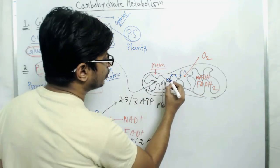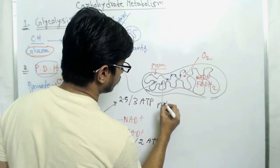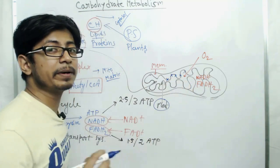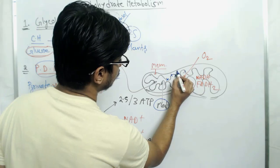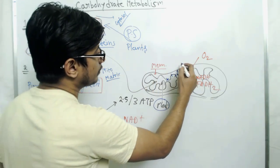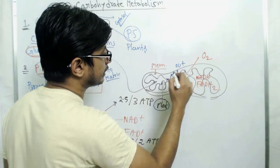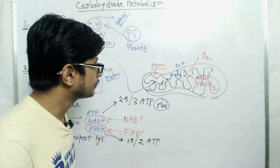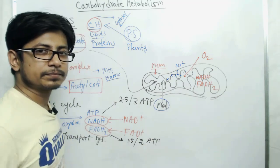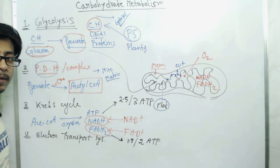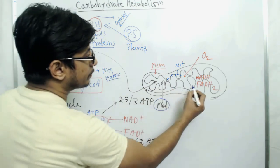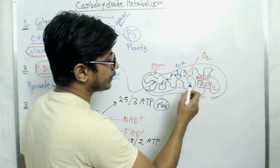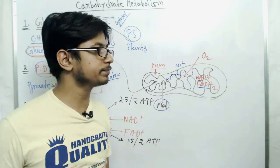The process of electron transport chain occurs between the matrix of mitochondria and the intermembrane space. Between the outer and inner layers of the membrane there is a gap. This is the matrix where the Krebs cycle takes place, and where we produce NADH and FADH2.